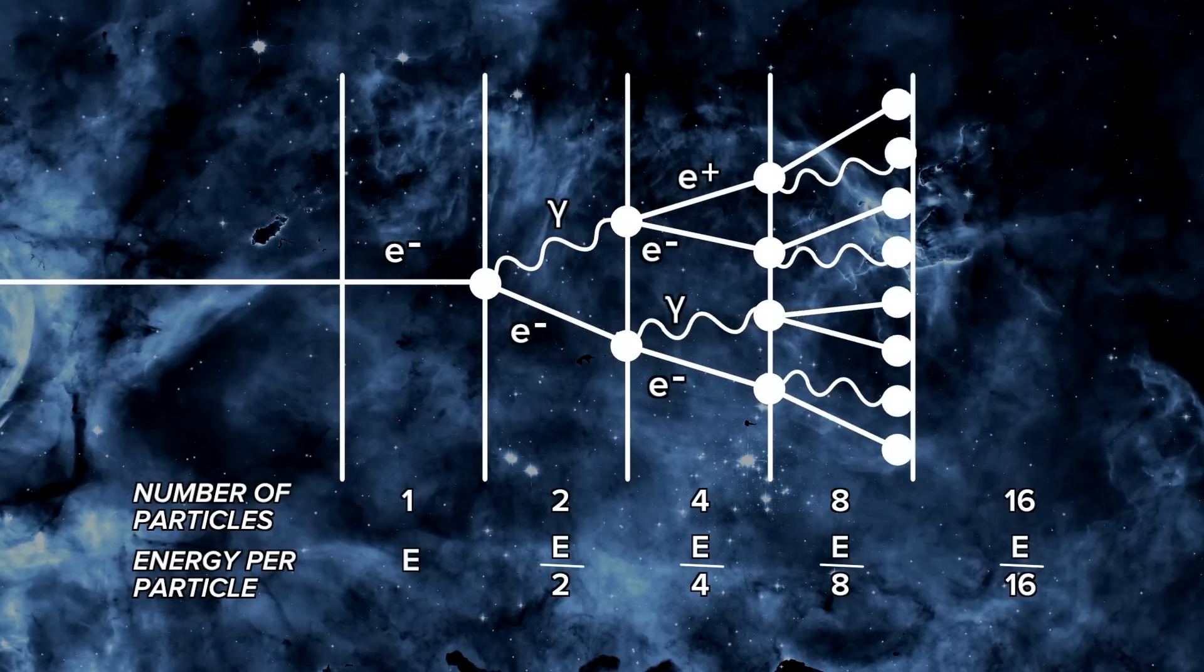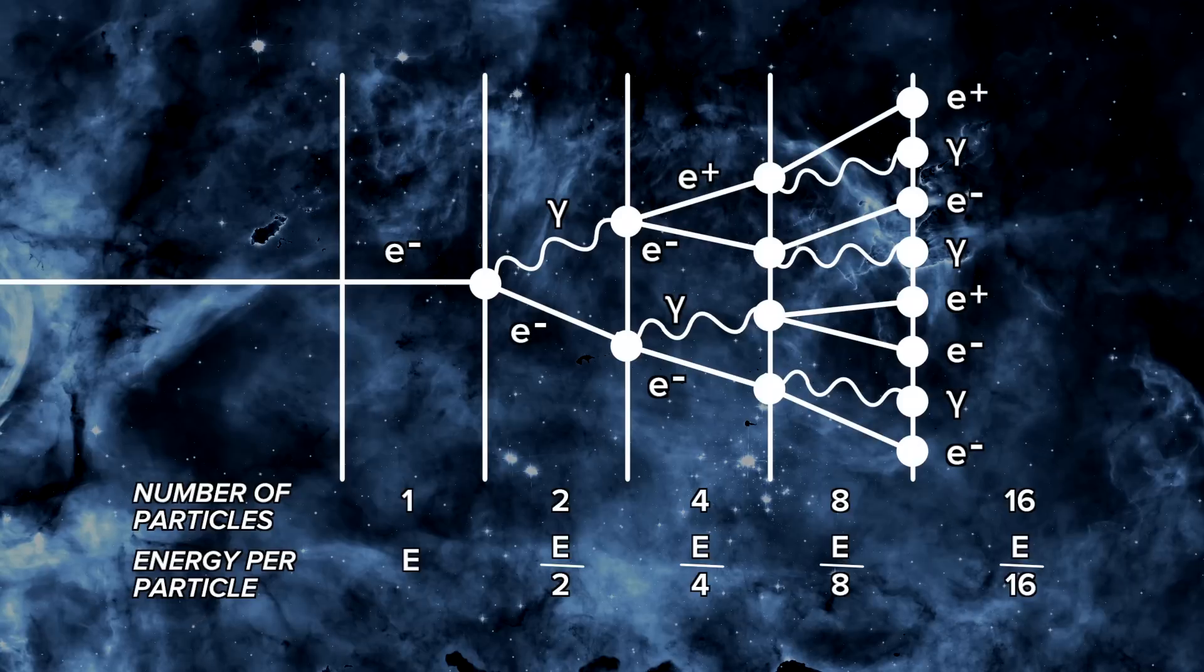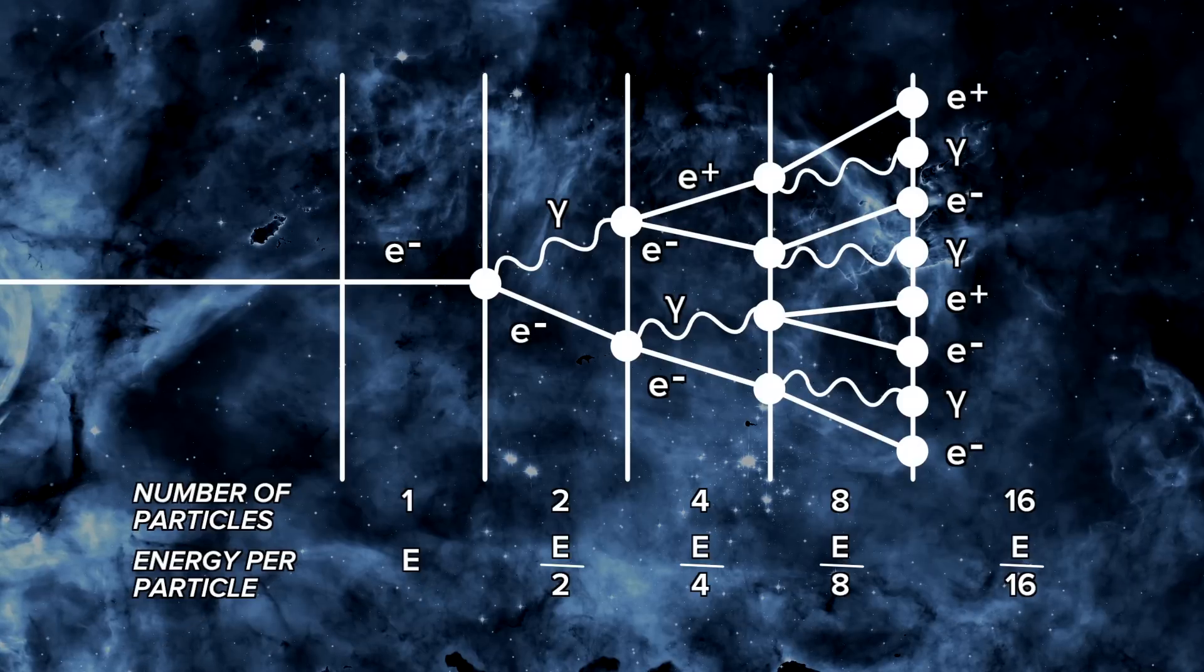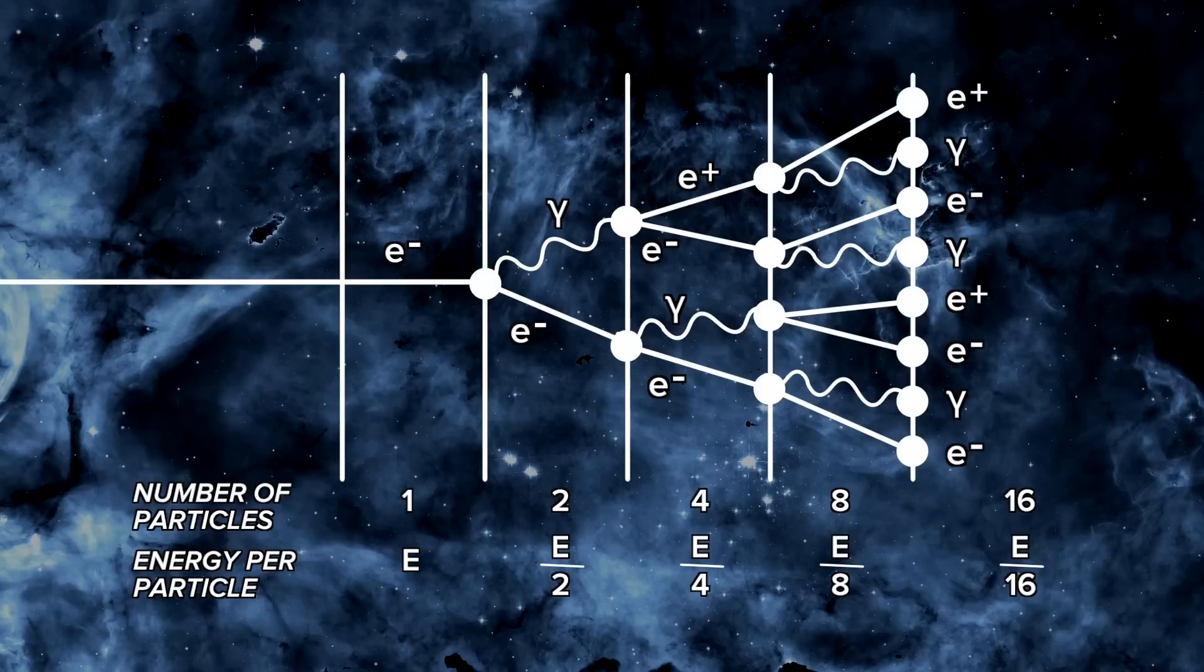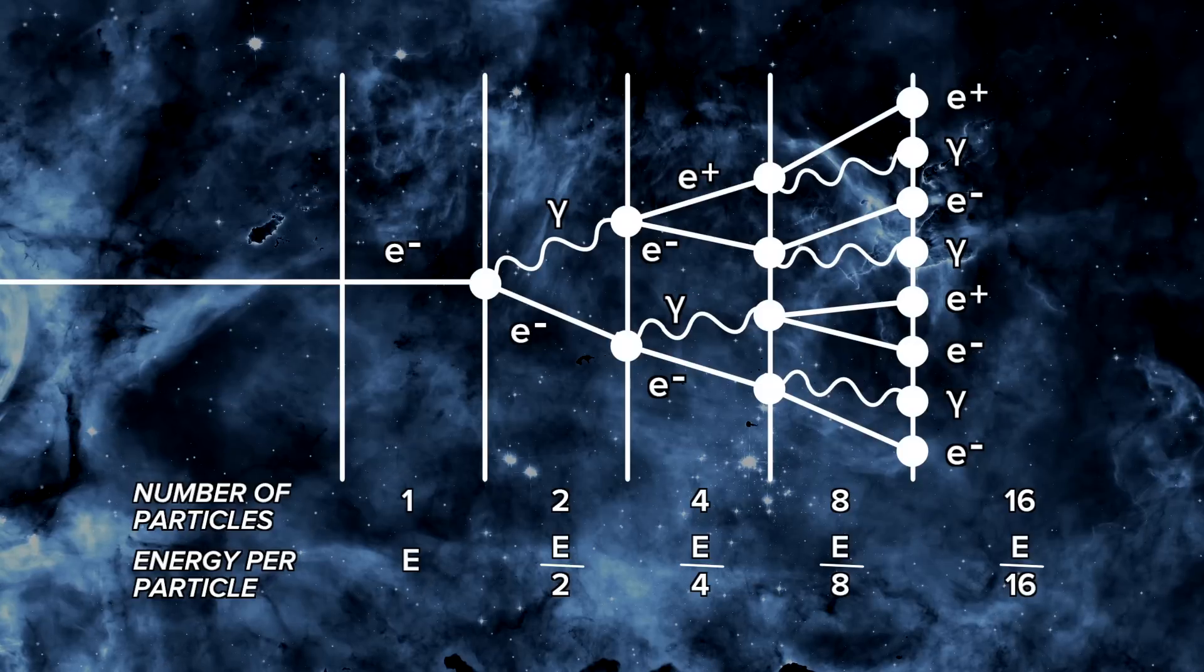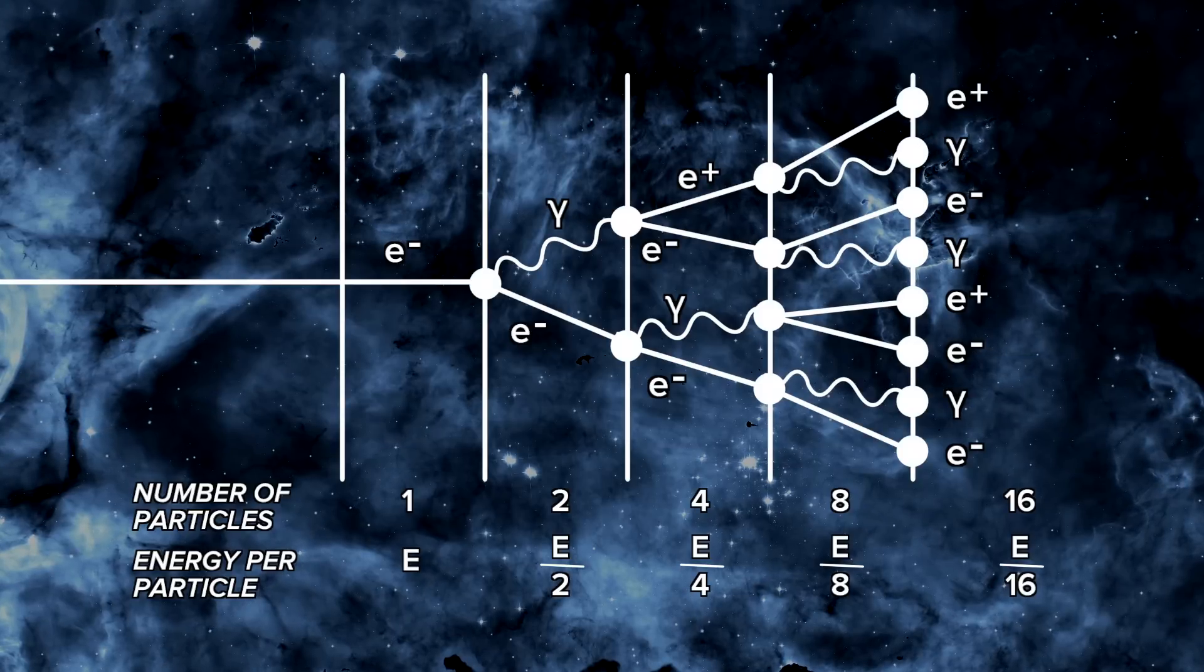Very quickly, a single particle can turn into thousands or tens of thousands. Since energy is conserved, every time new particles are made, they have lower energy. For example, in the case of one particle in and two out, the two out each have, on average, fifty percent of the energy of the first particle.